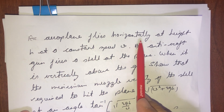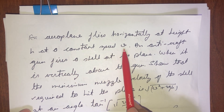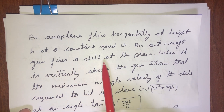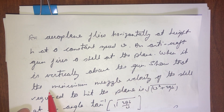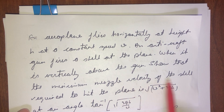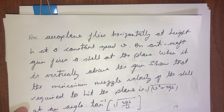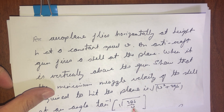The question is: an airplane flies horizontally at a height h at a constant speed v. An anti-aircraft gun fires a shell at the plane when it is vertically above the gun, so that the minimum muzzle velocity of the shell required to hit the plane is given by √(v² + 2gh), at an angle of tan inverse of √(2gh) divided by v.